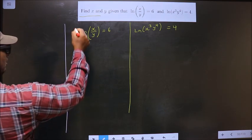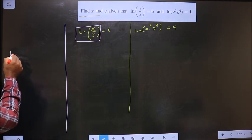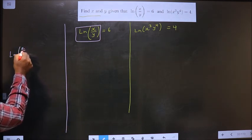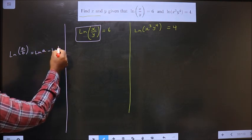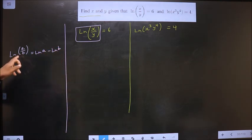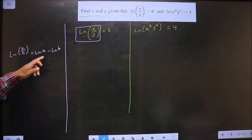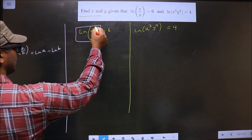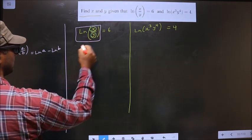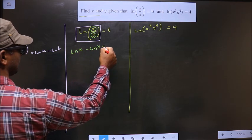On the first equation, I apply the formula: ln(a/b) = ln(a) - ln(b). Whenever you have a fraction, you get subtraction. So in place of a you have x, and in place of b you have y. You get ln(x) - ln(y) = 6.